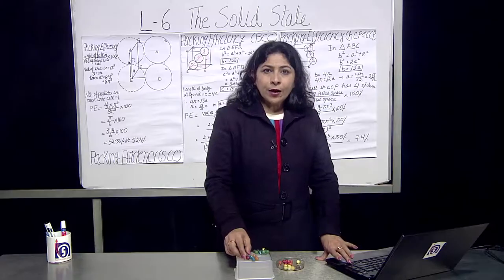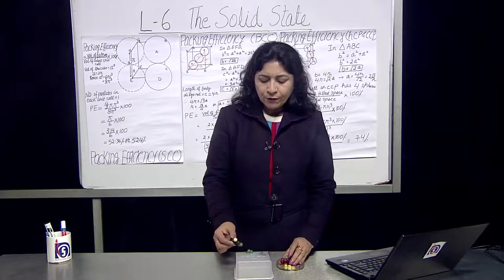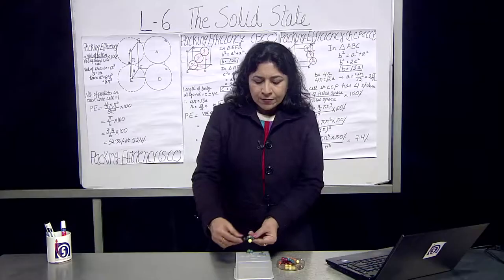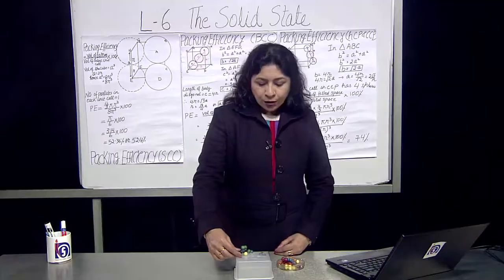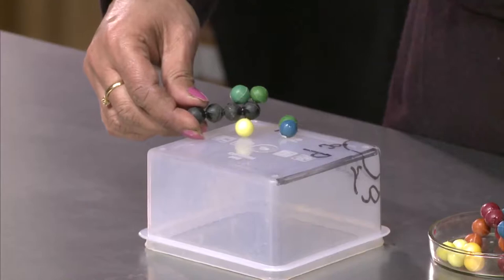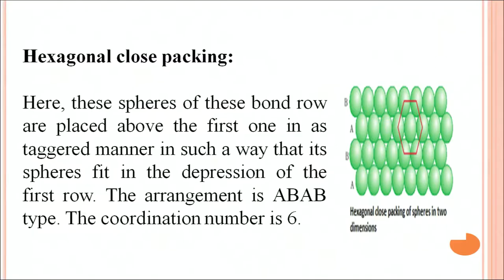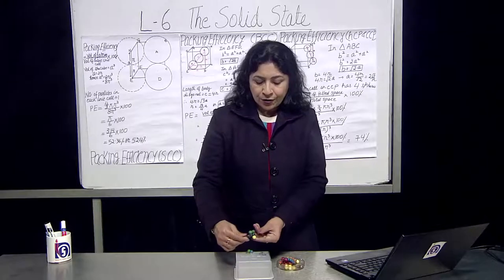The other one here is a hexagonal closed packing. If you see, it's something like on the groove, the groove which are formed, the atom I put over there. Here the spheres of the second row are placed above the first one in a staggered manner in such a way that its sphere fit in the depression of the first row. This arrangement is ABAB and the coordination number is 6 over here.